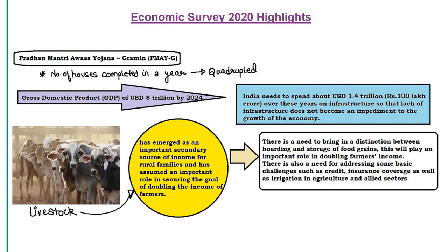Under Pradhan Mantri Awas Yojana Grameen, the number of houses completed in a year has been quadrupled. To achieve a GDP of USD 5 trillion by 2024, India needs to spend about 1.4 trillion US dollars — approximately 100 lakh crore rupees — on infrastructure, so that lack of infrastructure does not become an impediment to economic growth.